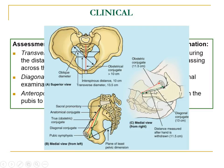To clarify: the diagonal conjugate measured from the inferior pubic symphysis to the sacral promontory is about 13 cm, easily measured by pervaginal examination. When we subtract about 1.5 cm we can get the anatomical conjugate or true conjugate, which extends from the top of the pubic symphysis to the sacral promontory. Note that in the picture it is written as obstetric conjugate but it is actually the anatomical conjugate or anteroposterior diameter at the pelvic inlet. In this way we can measure the diameter at the pelvic inlet.